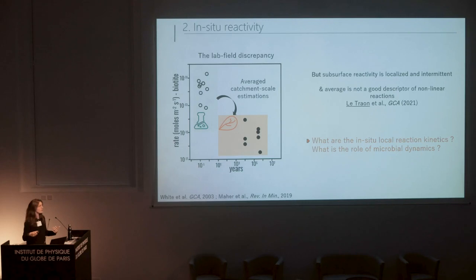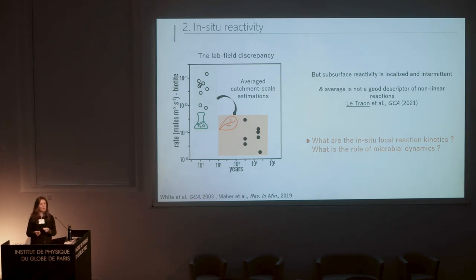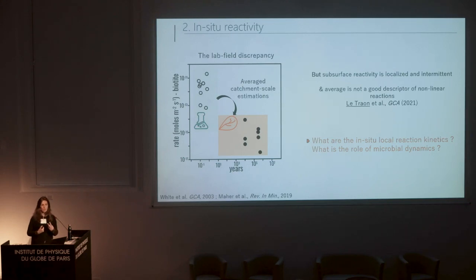Based on this, we were motivated to say that the missing scale is actually to do an experiment to directly measure these kinetics, not in the lab, but directly in the field. That was our first motivation. The second motivation was that microbes could play a major role, but most lab experiments don't take microbes into account, while at the catchment scale they could be very important. Based on these two motivations, we built up different experiments.